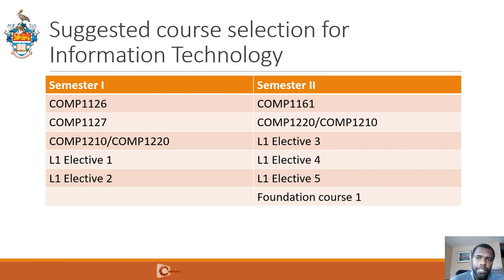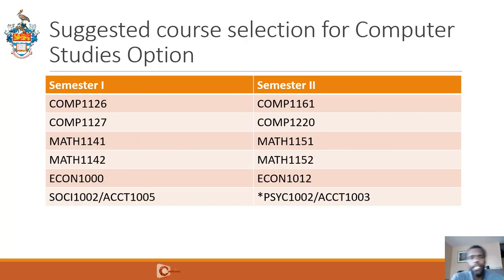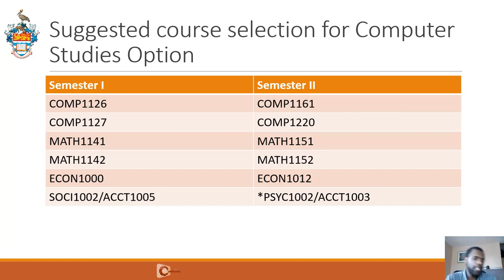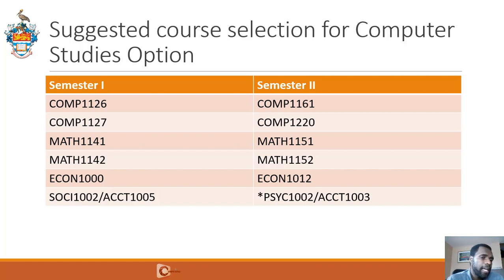The Computer Studies option combines Computing, Mathematics, and courses from Social Sciences, and this program doesn't allow you to have majors and minors — you just have Computer Studies option on your degree. In the first semester, you take Comp 1126, Comp 1127, Math 1141, Math 1142, Econ 1000, and either Soci 1002 or Accounts 1005. In the second semester, you take Comp 1161, Comp 1220, Math 1151, Math 1152, Econ 1012, and either Psych 1002 or Accounts 1003. The content from Comp 1210 is essentially satisfied by the Math 1152 requirement.